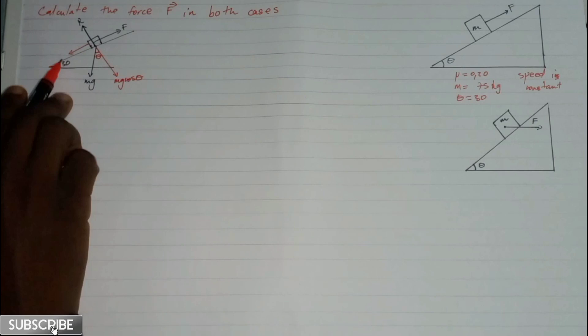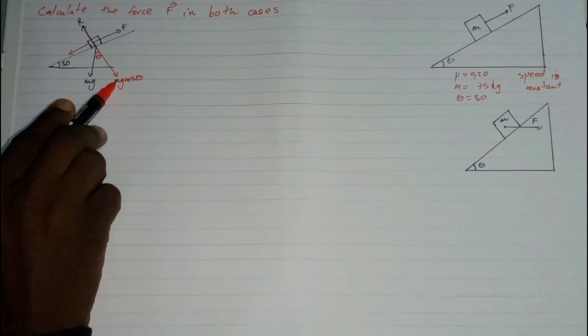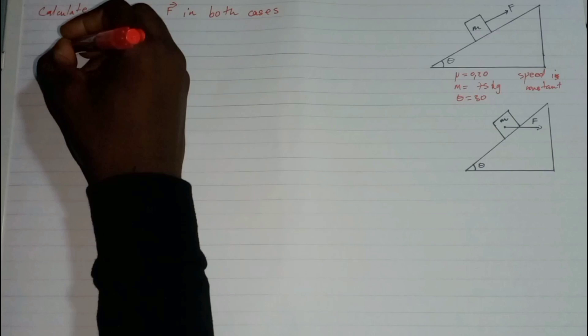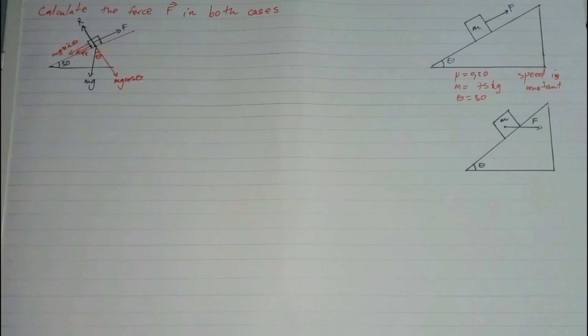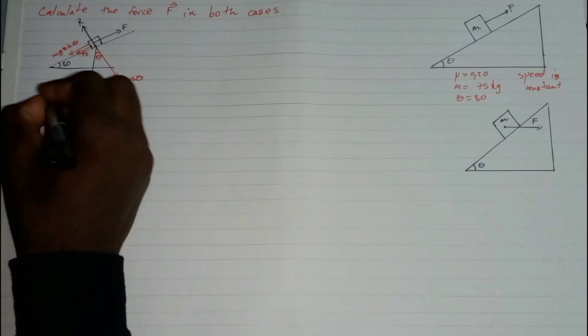We also have another force component - the force pushing down along the plane, which is mg sine theta. And we also have friction, which I'll call Fr. Friction opposes the motion.